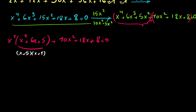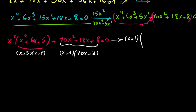For the remaining terms, instead of factoring out 2, I write 10x² + 18x + 8 as (x+1)(10x+8). So I can now factor out (x+1) from the whole expression, giving (x+1) times (x³ + 5x² + 10x + 8) equals 0.